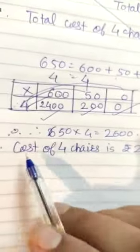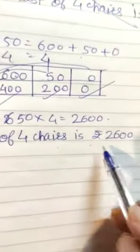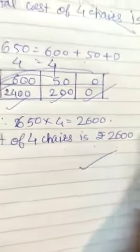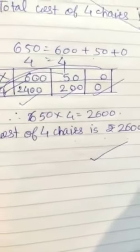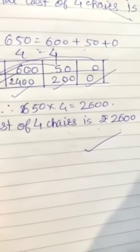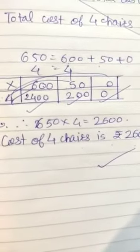So therefore cost of 4 chairs is 2600. Got it? Yes. So you complete this in your notebook as well as your textbook. Okay. Bye-bye.